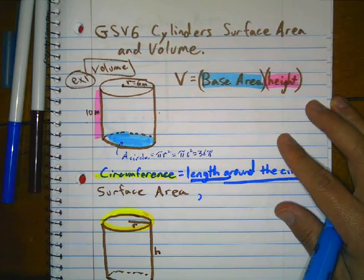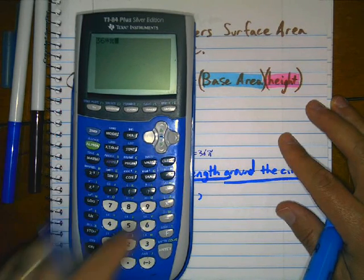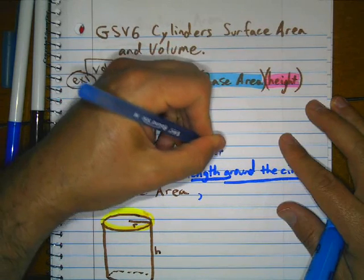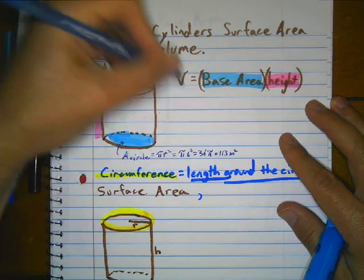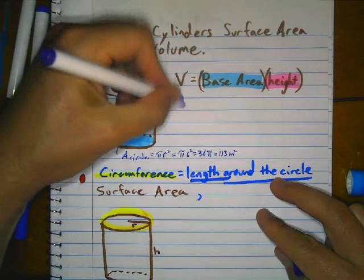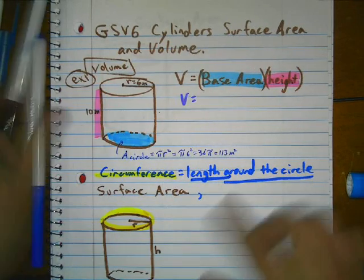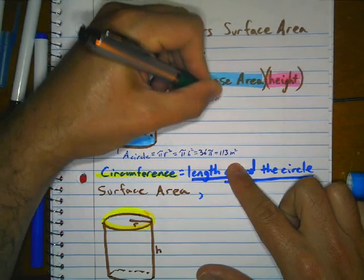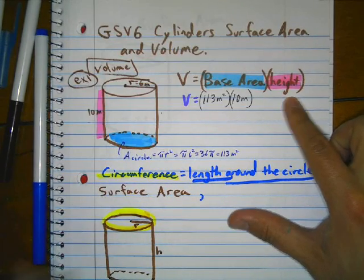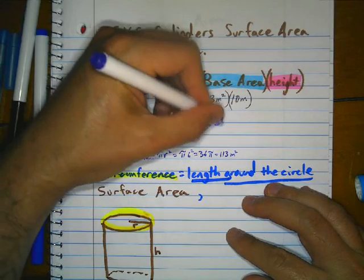If we round to a decimal, we get 36 times pi, which is approximately 113 meters squared. So the volume is equal to 113 meters squared times the height, which is 10 meters.